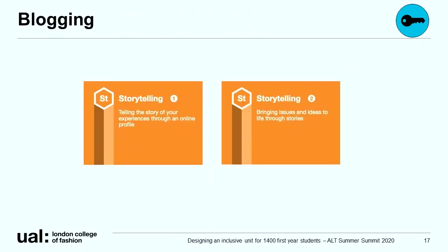Finally, a critical element of our design for inclusivity is connected to our assessment. We asked students to create four blogs as opposed to a formal essay. Our rationale for this was to provide them with the opportunity to submit their reflections in a visual way if they wanted to do so. This has been the least successful element of the unit, and one that we continue to work towards and develop further.